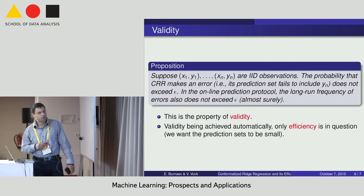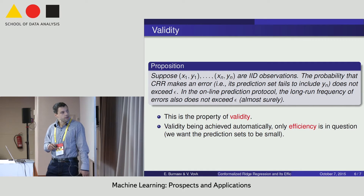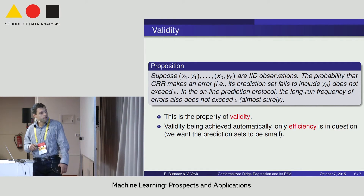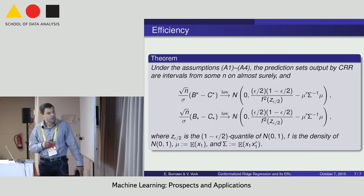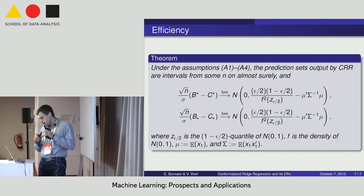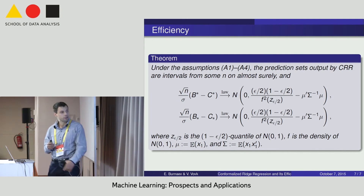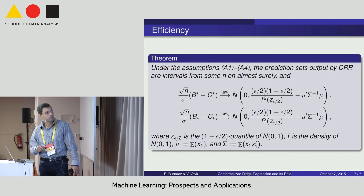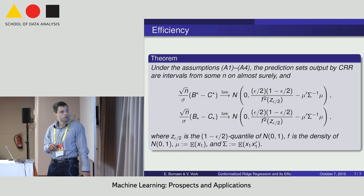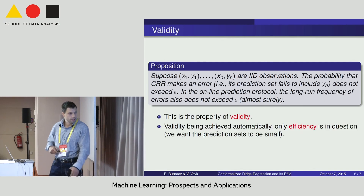All such values of y define our confidence interval — it's a non-parametric confidence interval that depends only on the conformity measure. It is well known that this prediction interval is valid in the sense that it provides the given probability of coverage. If our model is true, this conformal prediction interval should be close to the optimal Bayesian prediction interval, and it turns out that if the sample size is large this is indeed the case. You can see here the asymptotics: the Bayesian confidence interval is very close to the conformal prediction interval. This is the main result; the details are on the poster. Thank you.